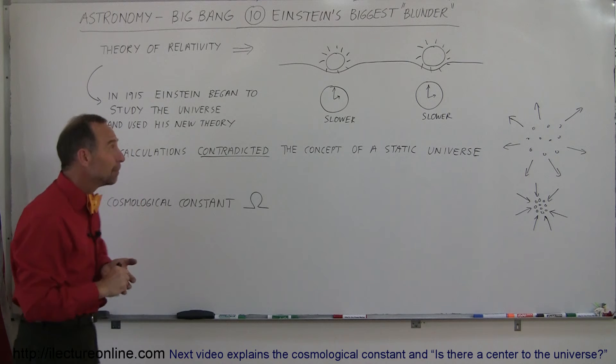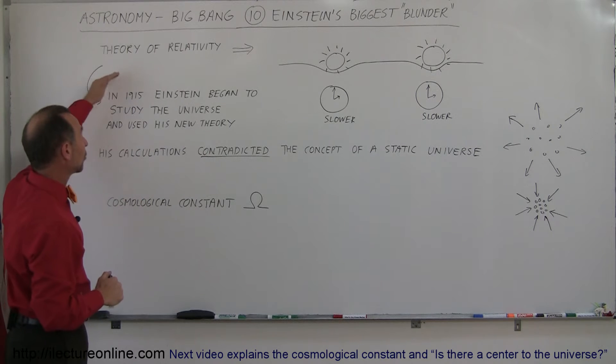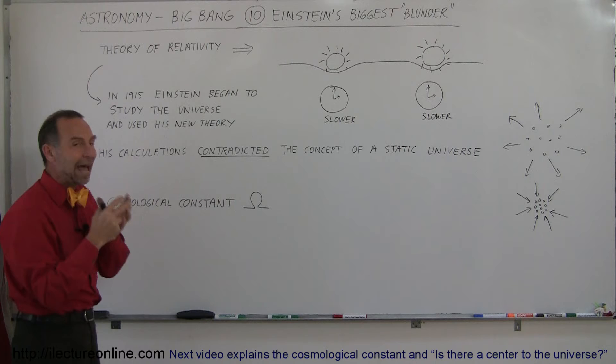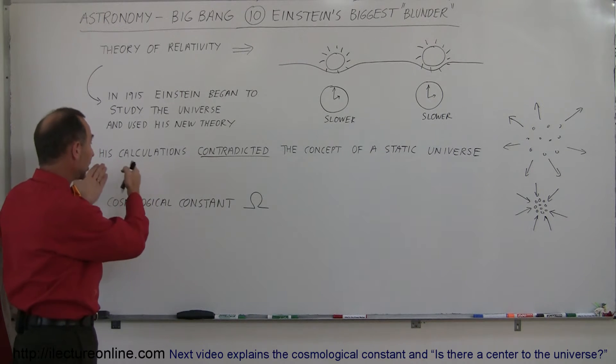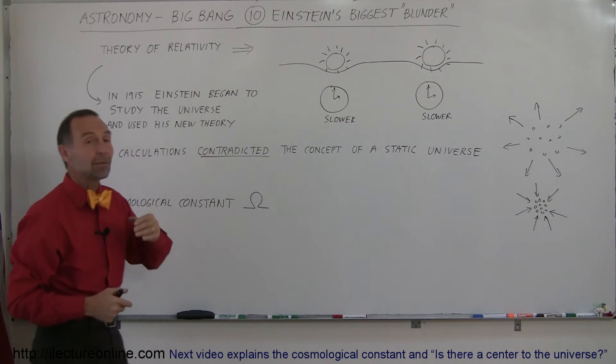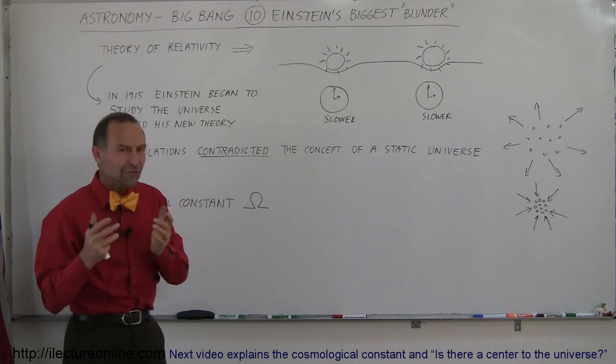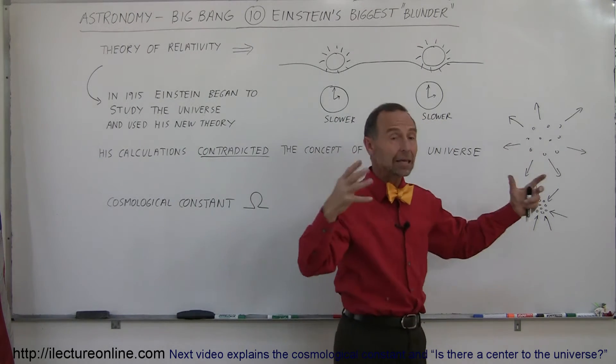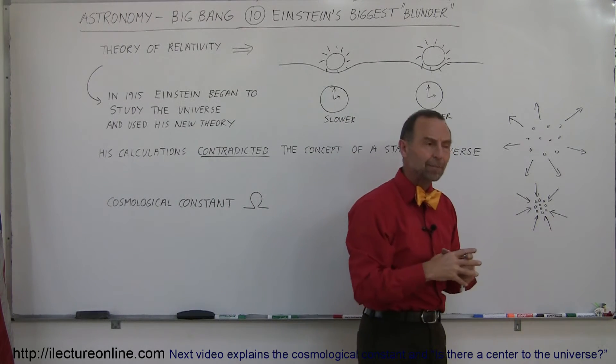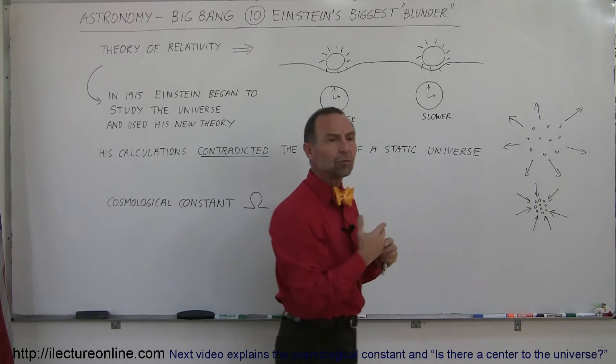So he began to calculate, based upon his equations and theories of relativity, how the universe would have to behave based upon these principles. And to his surprise, what he found was that his calculations contradicted the concept of the static universe. What he found was his calculations showed that either the universe should be expanding or the universe should be collapsing. And that was based upon the curvature of space and gravity.